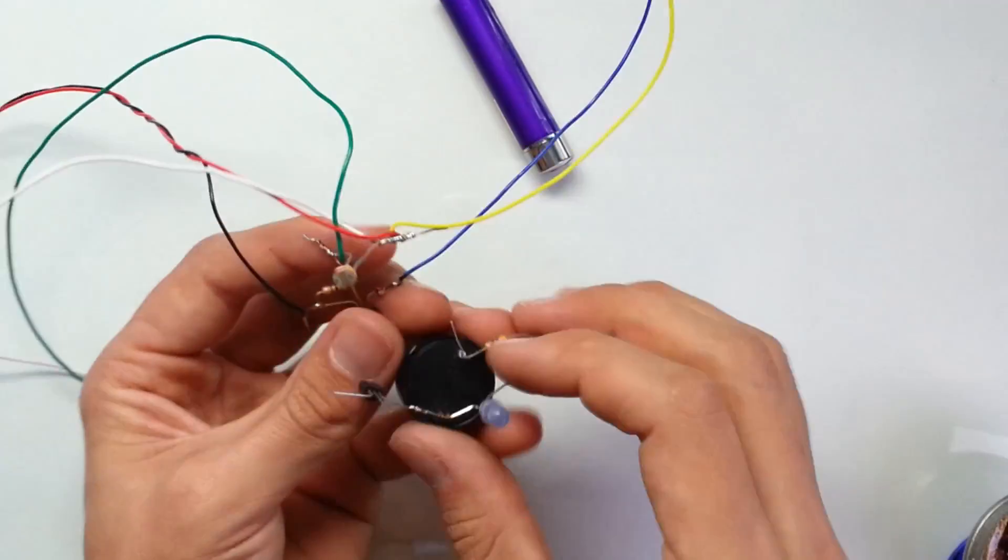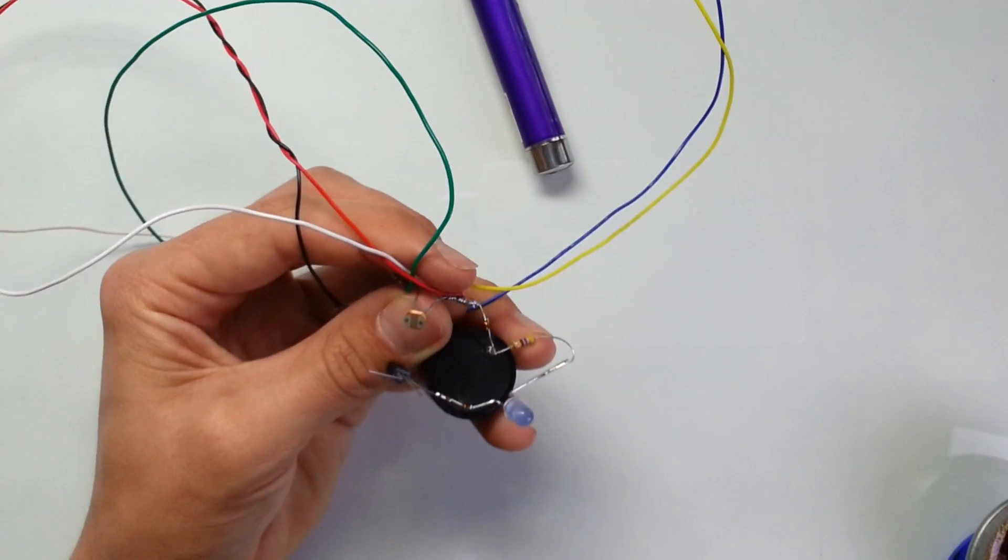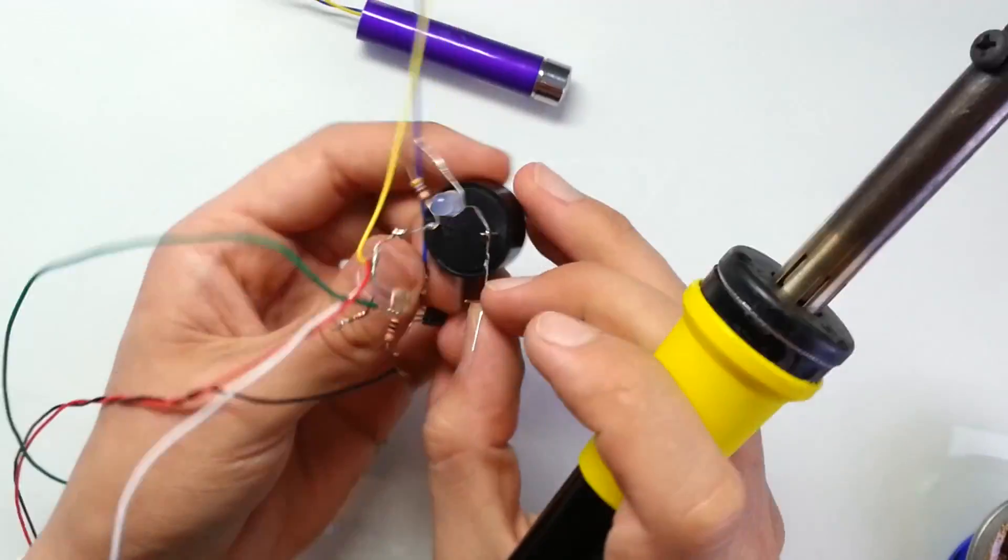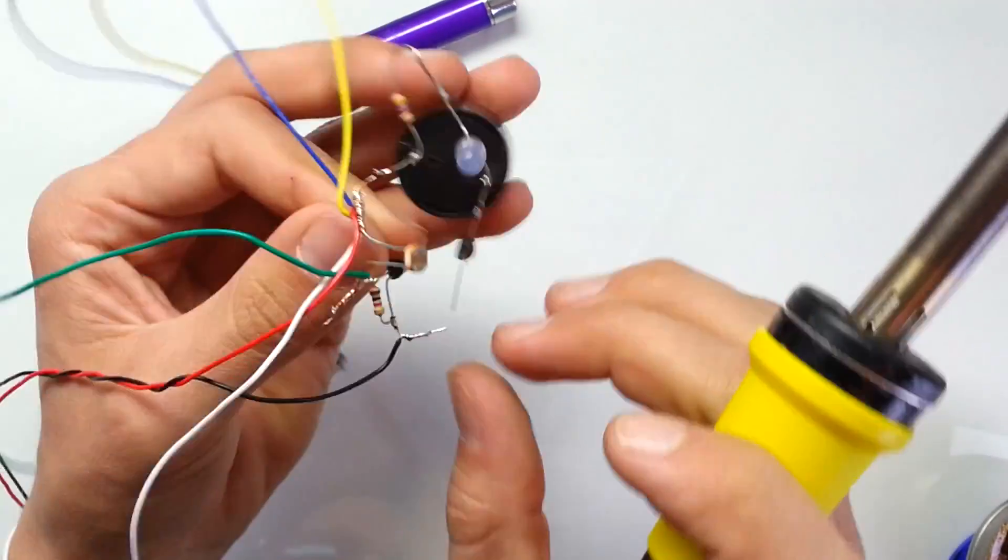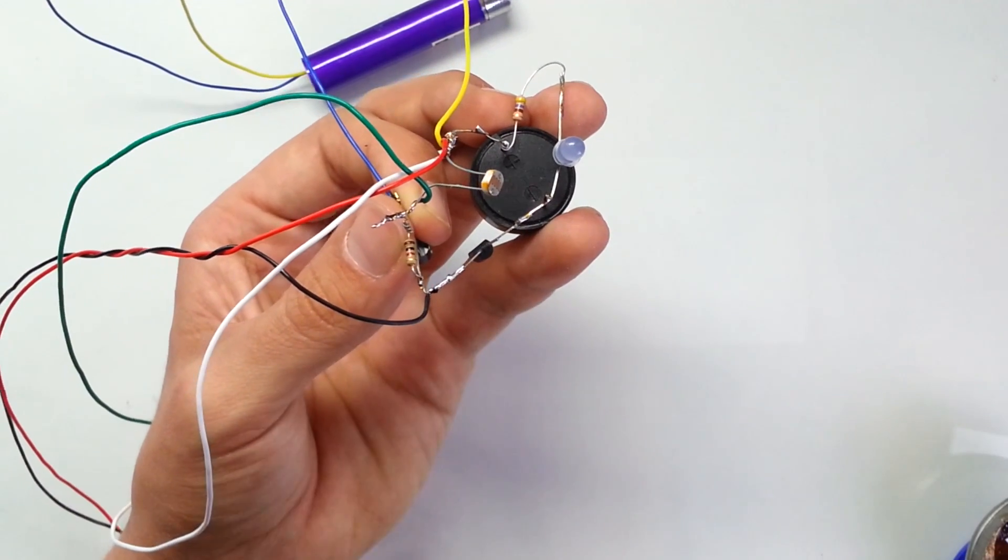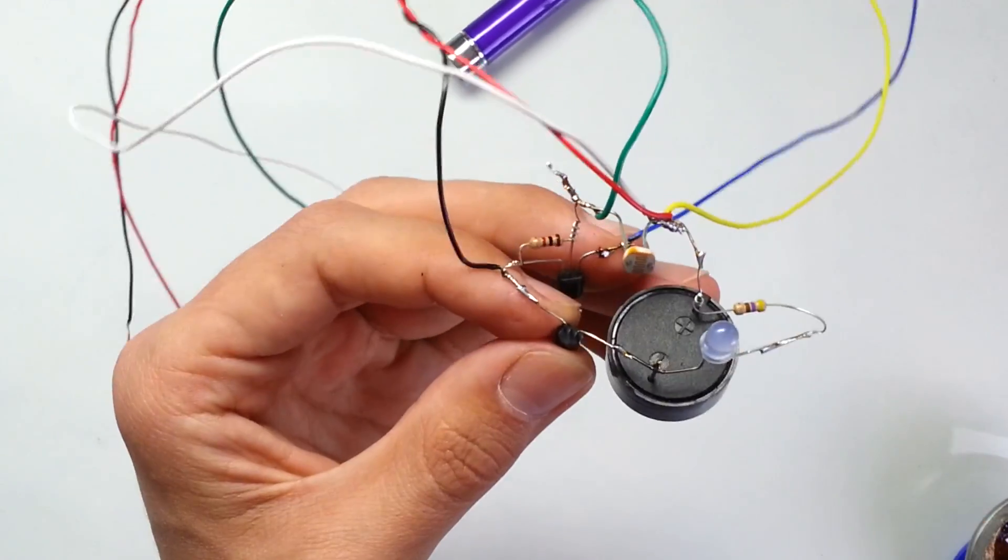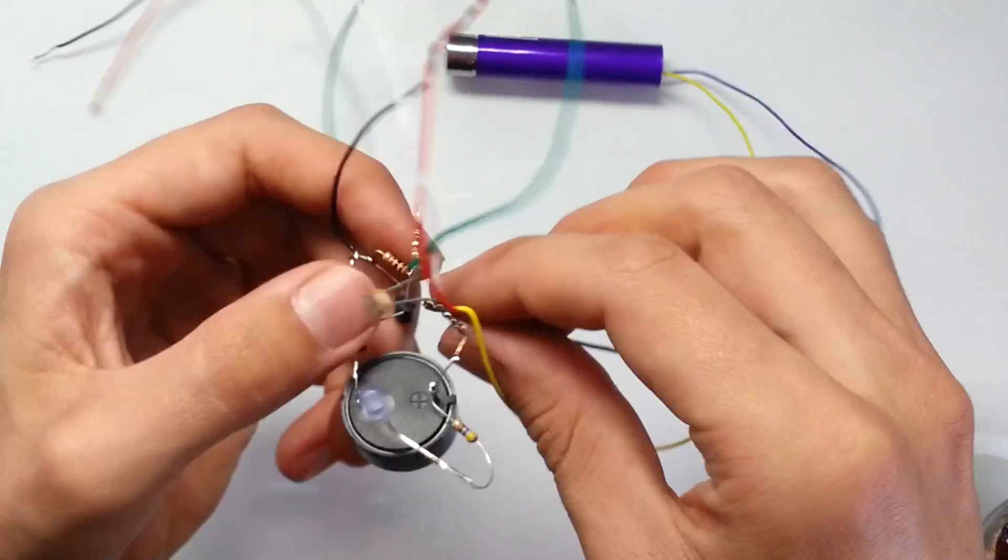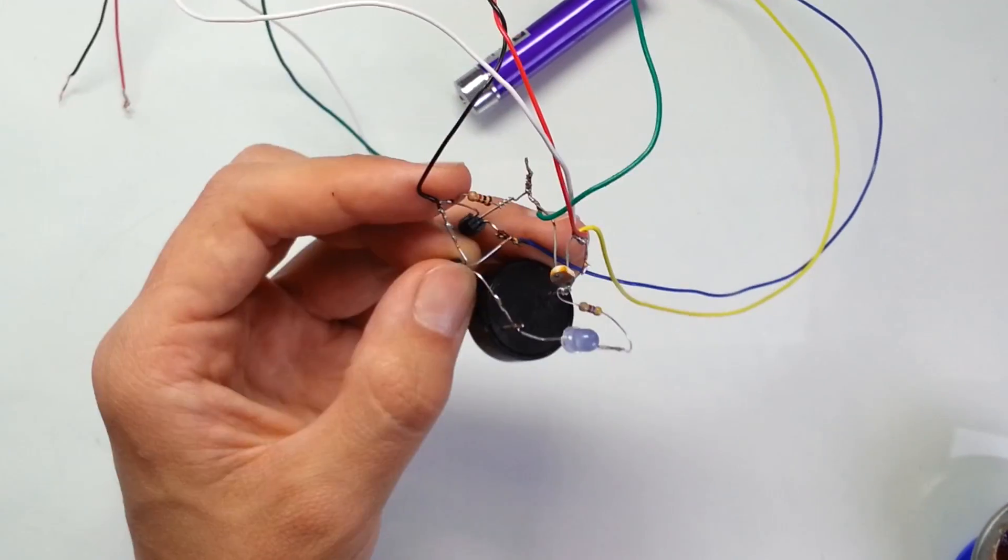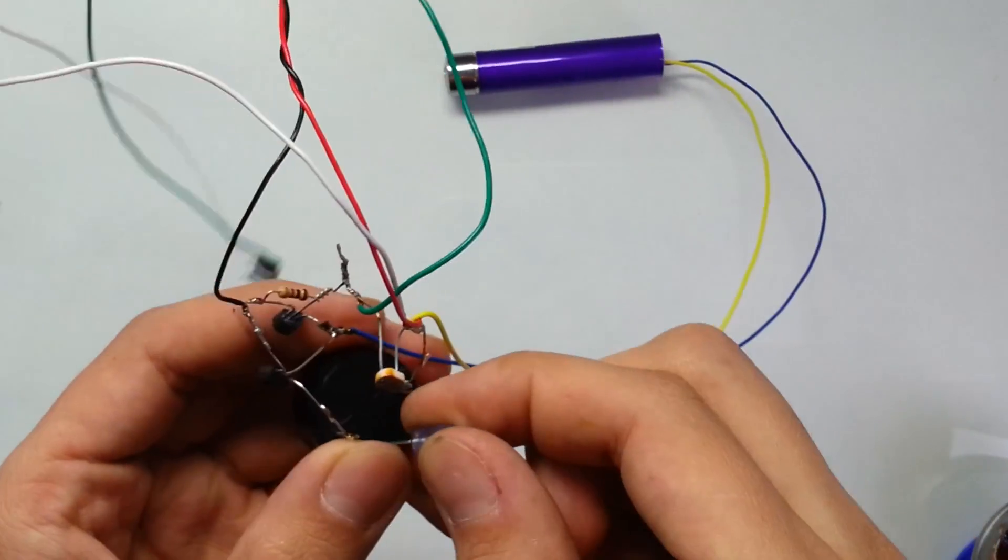Now let's solder the plus lead of the buzzer to the positive red wire. Now let's solder the source lead of the transistor Q2 to the negative black wire. And the last what we need to solder is the gate lead of the transistor Q2 to the drain lead of the transistor Q1. This device is ready. Let's test it.